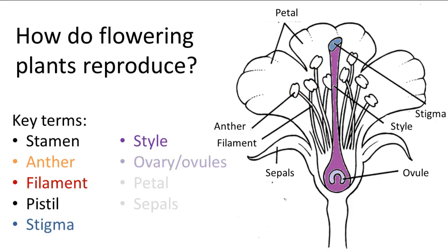The pistil is the female reproductive organ made of the stigma, the style, and the ovule and ovary. The stigma is shown in blue — it's the sticky top part of the pistil, and it's what collects the pollen grains. The style is this tube-like structure that the pollen will eventually burrow through. The ovule is this upside-down U-shaped thing within the ovary, which is the bulb-like structure that protects the ovule.